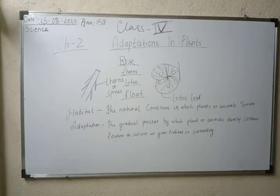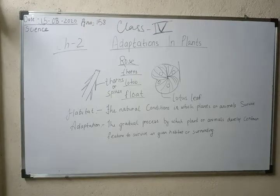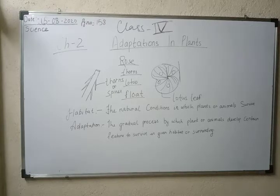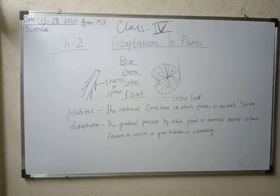We all know that in India there are different types of festivals as well as different types of seasons. There are a lot of seasons here — for example, summer season, winter season, rainy season, spring season. In the same way, different parts of the land have different types of climate.